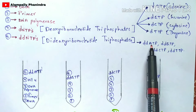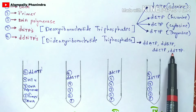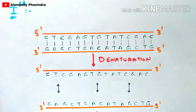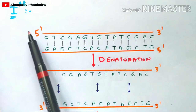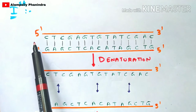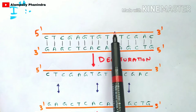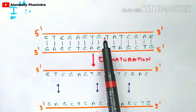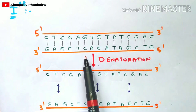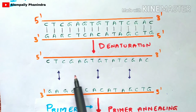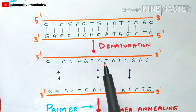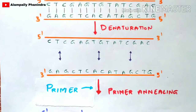ddATP is dideoxyadenosine triphosphate, ddGTP is dideoxyguanine triphosphate, ddCTP is dideoxycytosine triphosphate, and ddTTP is dideoxythymine triphosphate — all containing dideoxyribose sugar which cannot bind to the next nucleotide. The process occurs the same in every test tube, but the results will be different. The first step in each test tube is denaturation — separation of the double-stranded DNA by applying high heat, breaking the bonds between strands.